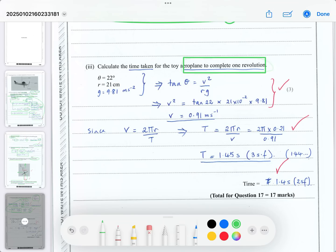Now calculate the time for one revolution. We're given data including g from the data sheet. We know θ, r, and g, but not v. Rearrange the equation to make v² the subject, then square root the result to get v = 0.91 m/s to two significant figures.